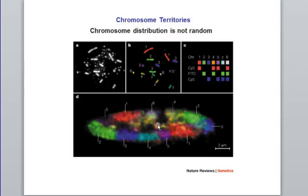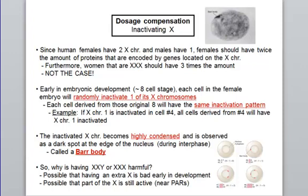When the X chromosome gets inactivated, it becomes highly condensed and forms a Barr body. Notice that this Barr body is located very close to the nuclear envelope — a place of low transcription. In triple X syndrome, you will find two Barr bodies, again close to the nuclear envelope, which is a place of high suppression of gene expression.